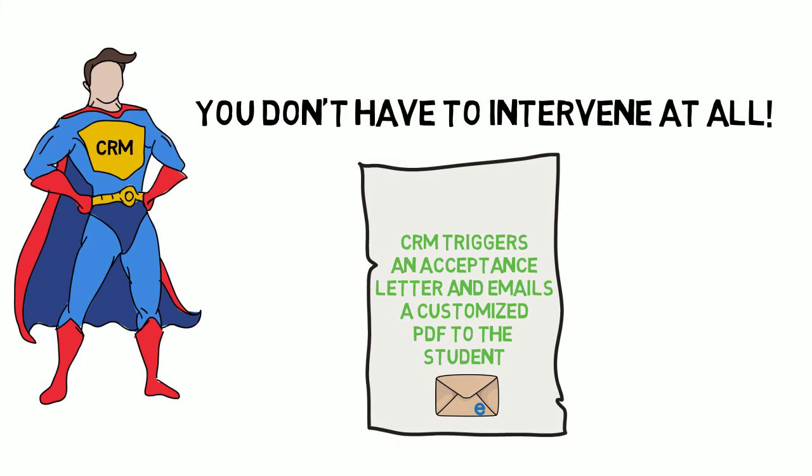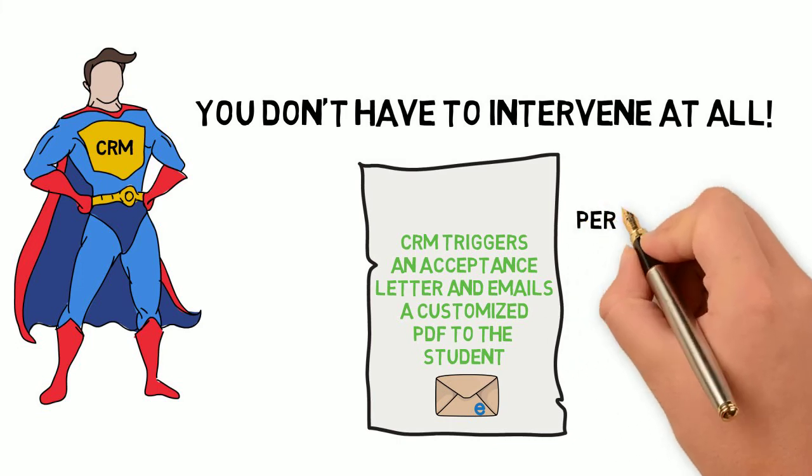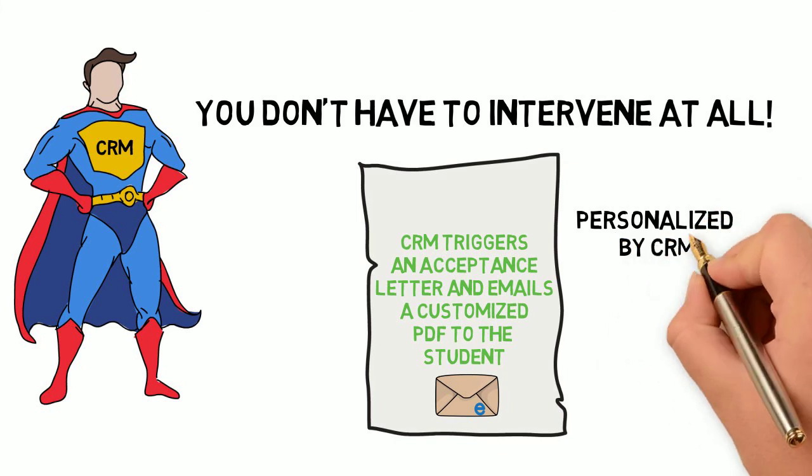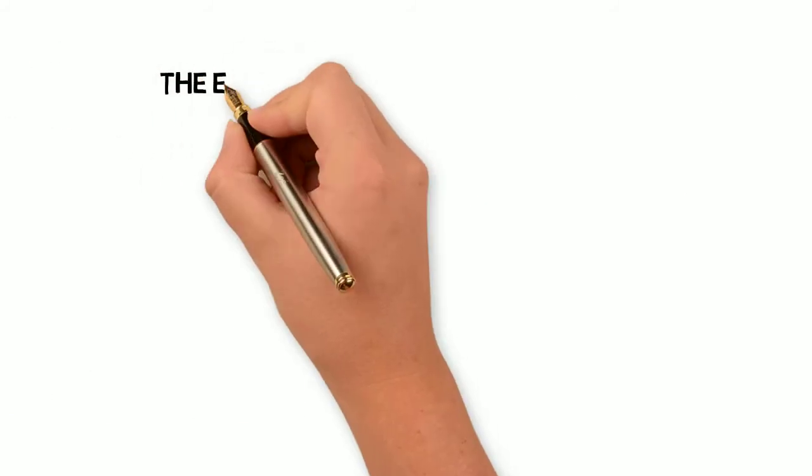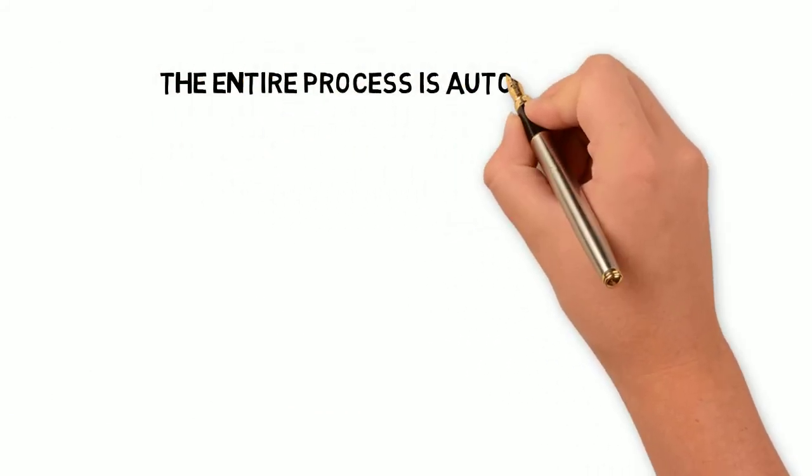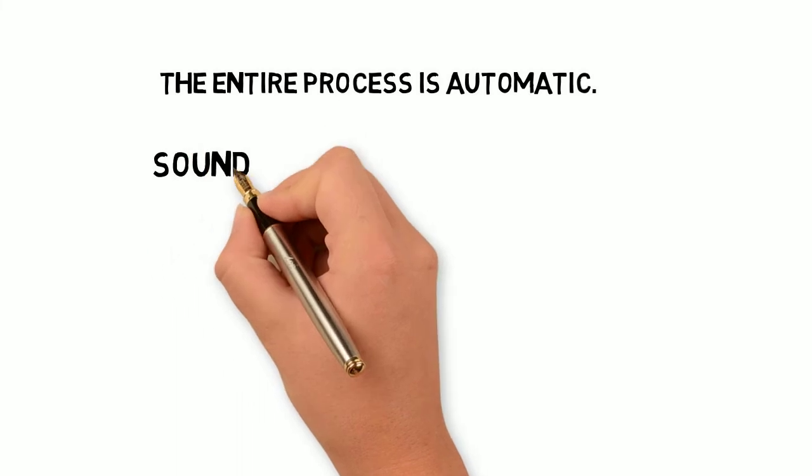If the student is missing credits, as in our example, CRM would trigger a personalized PDF indicating exactly which courses the student needs to take. It can even include details about those courses, such as associated costs, locations, and dates. Note that the entire process is automatic and requires no human intervention.